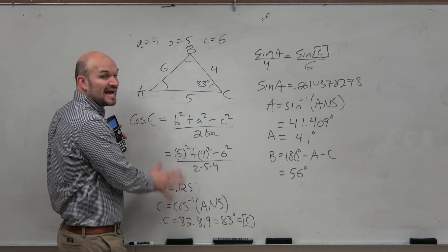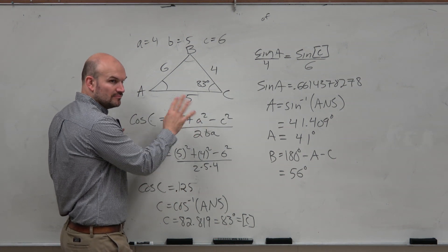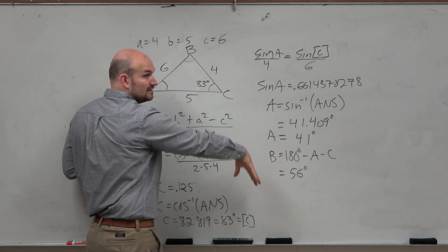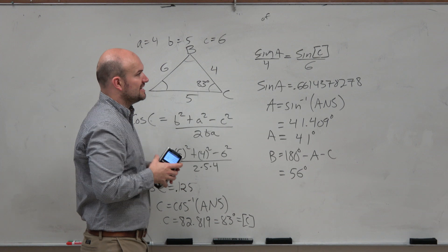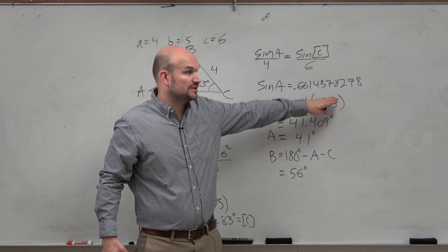However, you can easily make mistakes by forgetting, like, moving the variables around. Whereas law of sines is really quickly, less opportunities to make mistakes. But then some people will use it incorrectly, like when there's an ambiguous case. Like, they won't find the largest angle first.